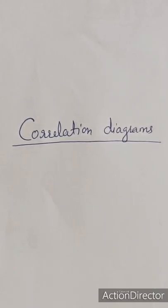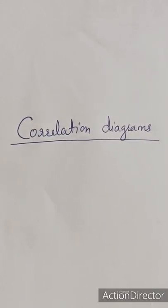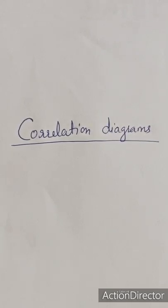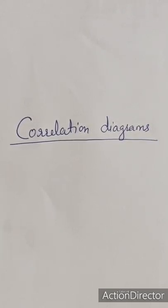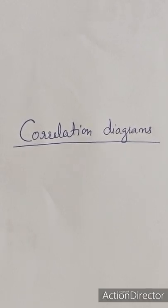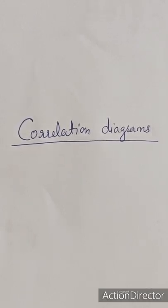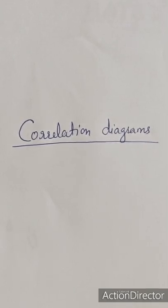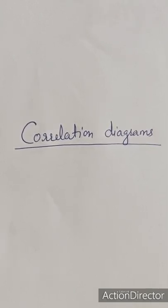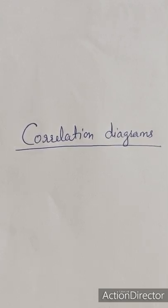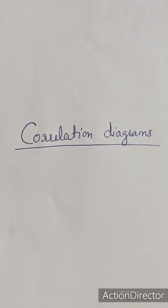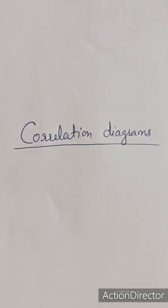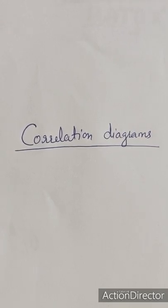Today we will study about correlation diagrams — how they can be formed and what is their importance. These diagrams are helpful in suggesting the non-crossing rule, so the non-crossing rule has been generated from correlation diagrams. We will explain what correlation diagrams are and how they can be formed.